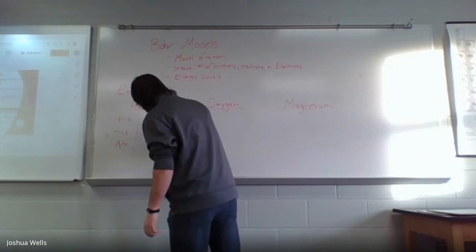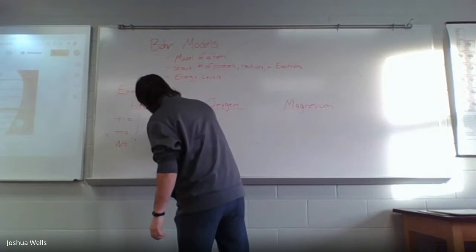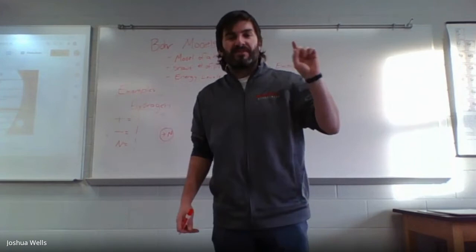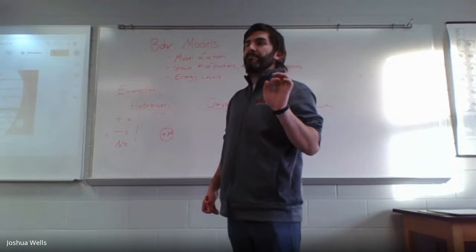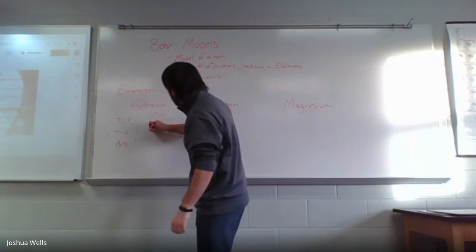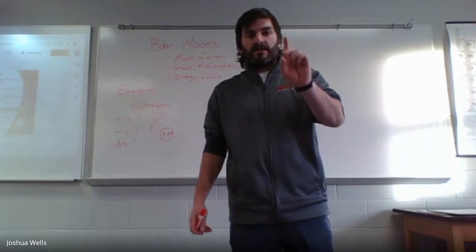I'm going to start by drawing my nucleus, the center of my atom. I'm going to draw my circle in the very middle. In that circle I'm going to put one plus and one N, showing that I have one proton and one neutron. Around it, I'm going to add my energy levels. An energy level is the circle or orbit that an electron can be found on inside of the electron cloud. Each type of element will have a different number of energy levels. Hydrogen has one energy level, so I'm going to draw one circle around my nucleus.